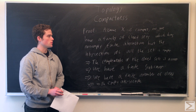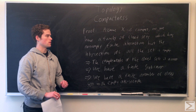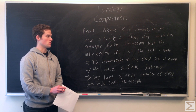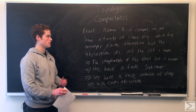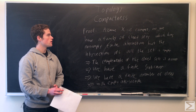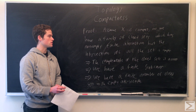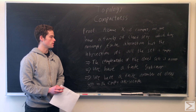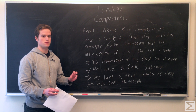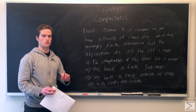Taking the complement of all the closed sets — since the intersection is empty, the union of the complements covers all of X. So the complement of all these closed sets gives us an open cover of X. Since we assumed X is compact, this cover has some finite sub-cover.